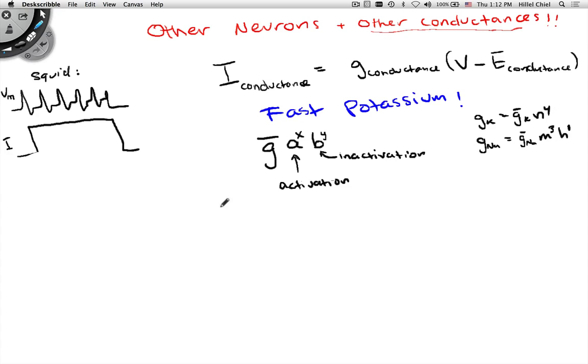Now, going on to the fast potassium, they found that they called it A current, and that IA was equal to g sub A max times our two variables. A to the X, B to the Y, and then we have our membrane voltage minus E sub K. This should be the same K that we use for delayed rectifier for the standard Hodgkin-Huxley voltage-dependent potassium channel. So now let's talk about what we change these to. They found that the activation was M sub A to the first power. And the inactivation was H sub A, again, to the first power.